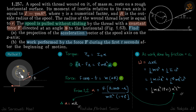For torque: friction force into small r, and F into capital R — these two contribute to the torque. Assuming the spool rotates clockwise, we get: f·r minus F·R equals I·alpha, where I equals gamma·m·R². This is the first equation. For force: F·cos(theta) minus friction f equals m·a, and a equals alpha·R since there is no sliding.